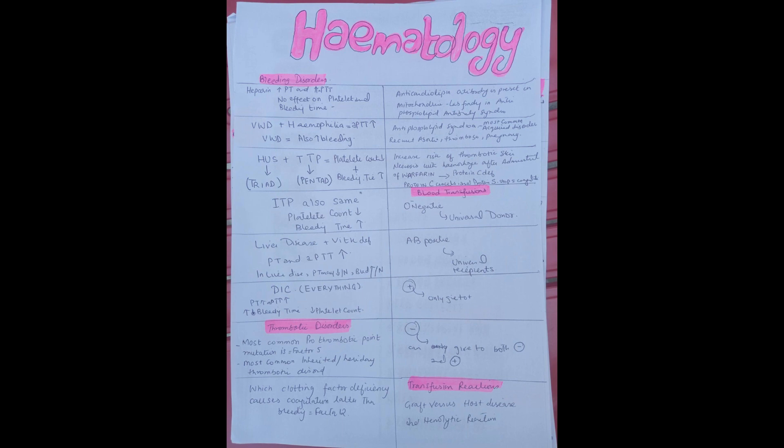Now let's move on to thrombotic disorders. A few things about the thrombotic disorder. The most common prothrombotic point mutation is factor V. It is also the most common inherited thrombotic disorder. The other thing which clotting factor deficiency causes coagulation rather than bleeding is factor XII.